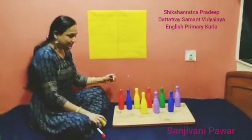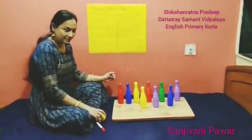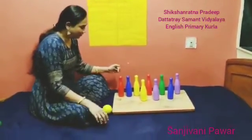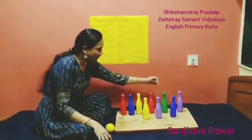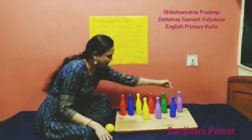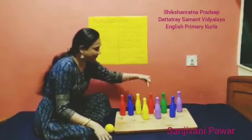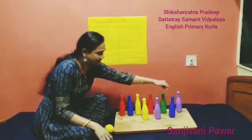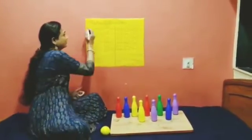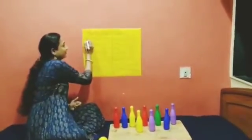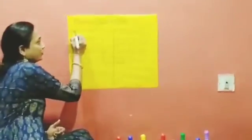Let's count these bottles: 1, 2, 3, 4, 5, 6, 7, 8, 9. How many bottles are there? 9 bottles.